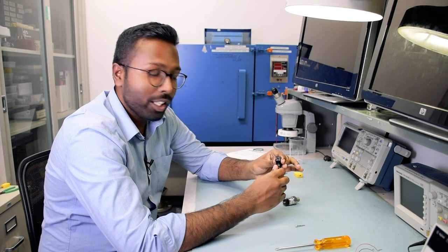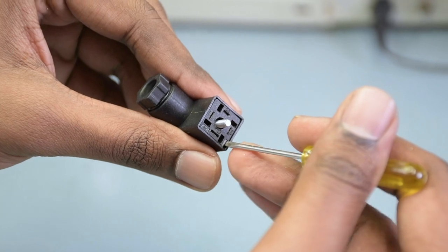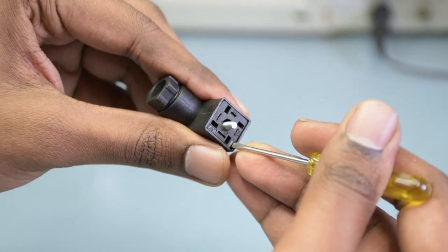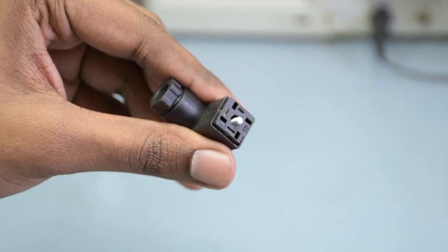Once you disconnect the mini DIN plug from the body of the transducer, you'll see a little slot at the bottom. Use a flat blade screwdriver, push it in like so, apply a little bit of pressure, and then pry the whole assembly from the inside out.